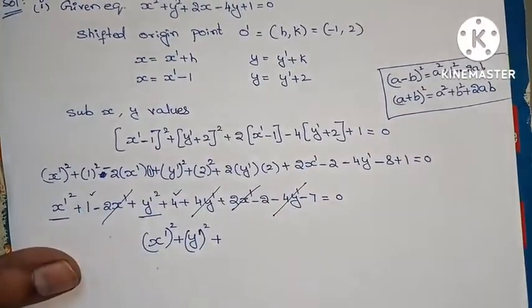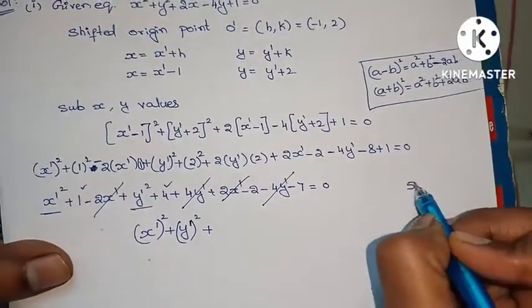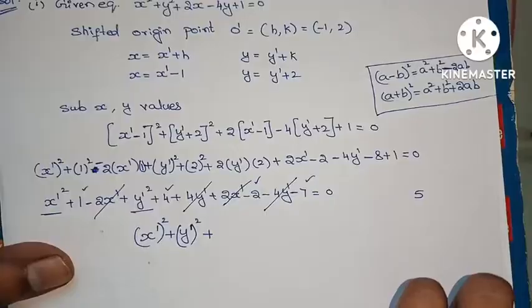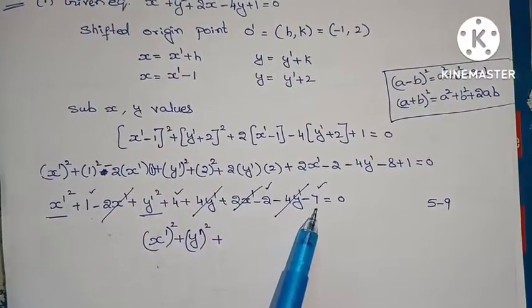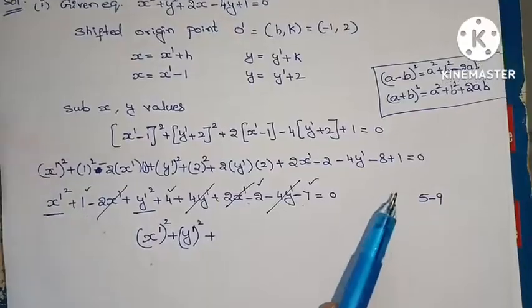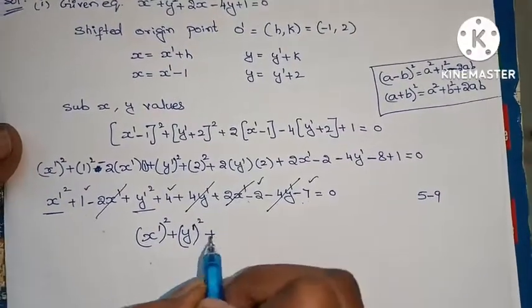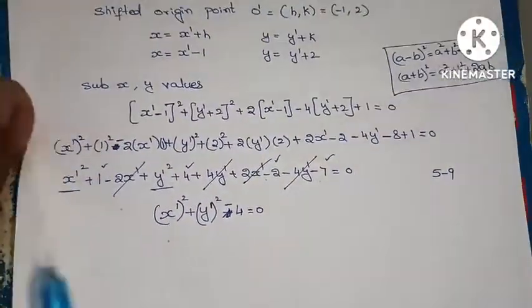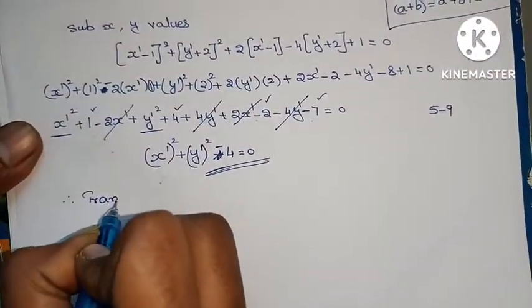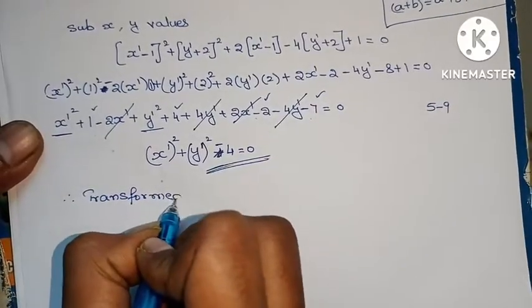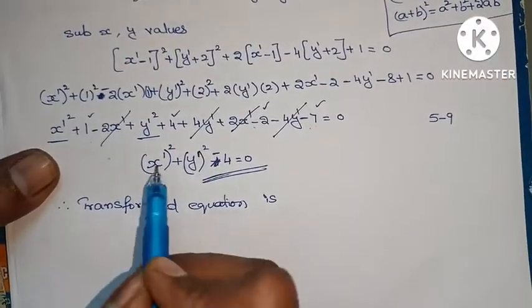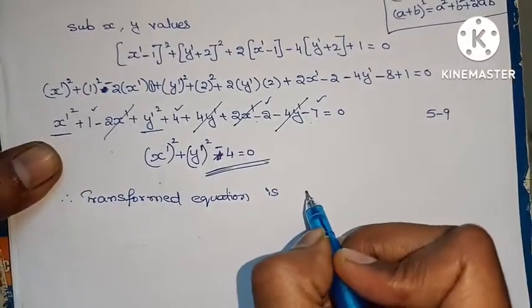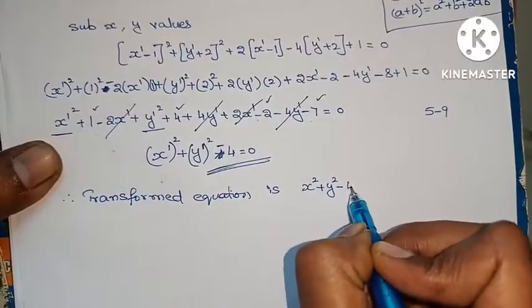Collecting constants: 1 plus 4 minus 2 minus 8 plus 1. The x dash terms cancel: 2 x dash minus 2 x dash equals 0. The y dash terms cancel: 4 y dash minus 4 y dash equals 0. Constants: 1 plus 4 minus 2 minus 8 plus 1 equals minus 4. Therefore the transformed equation is x dash square plus y dash square minus 4 equals to 0.